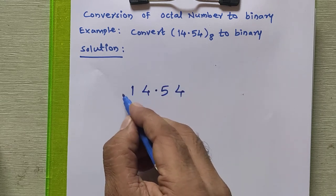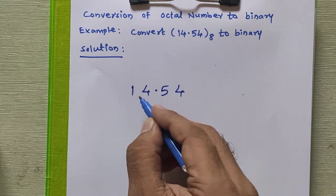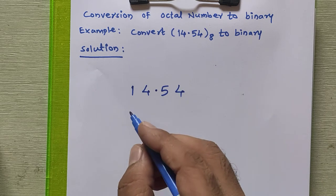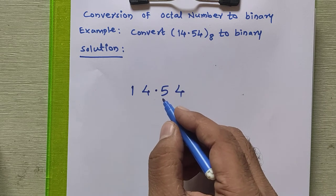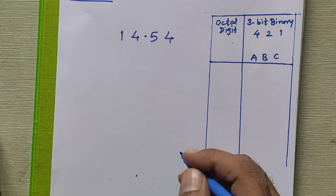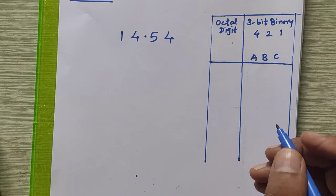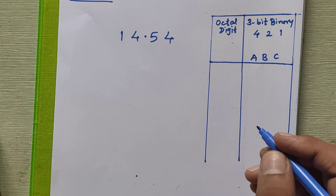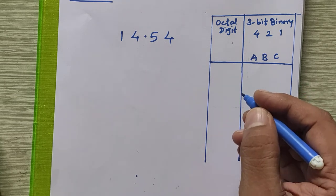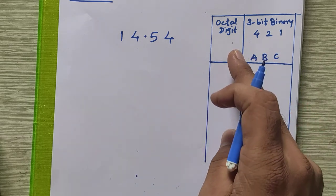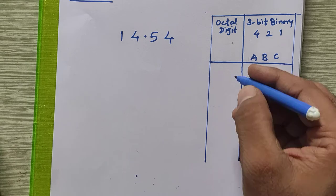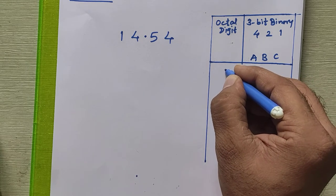For each octal digit given to us, we have to write the three-bit binary equivalent. Now we will see how to get the three-bit binary equivalent for each and every octal digit. As we know, in the octal number system there are eight valid digits, that is from 0 to 7. So I have prepared a table of octal digits and their three-bit binary equivalents.